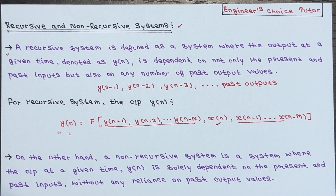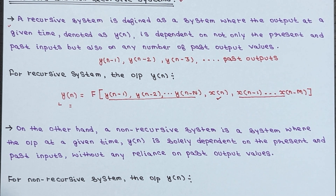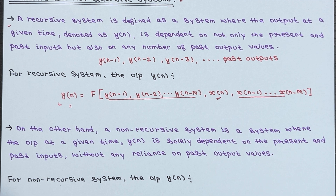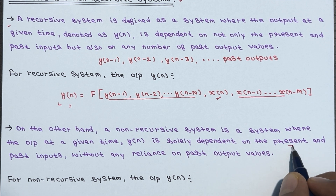On the other hand, non-recursive systems are a bit different. In these systems, the output at a given time y of n is solely determined by the present and past inputs — there is no need to look back at previous output values. The output is solely dependent on the present and past inputs.